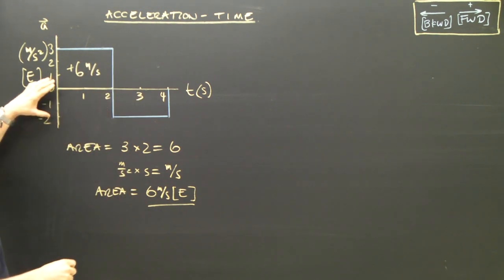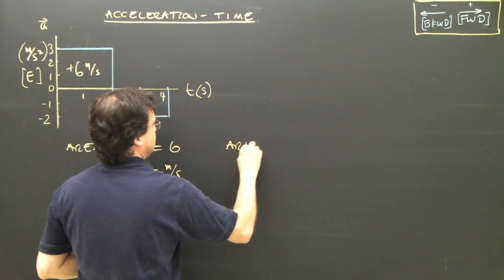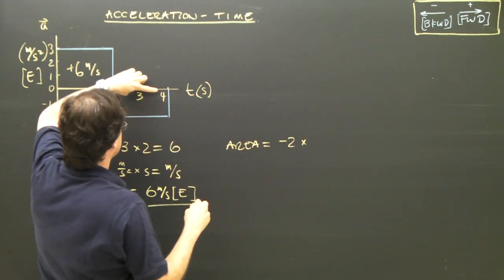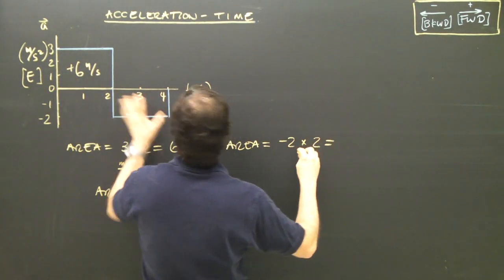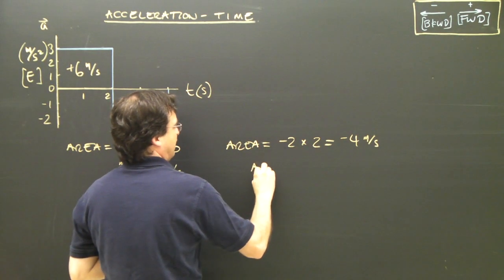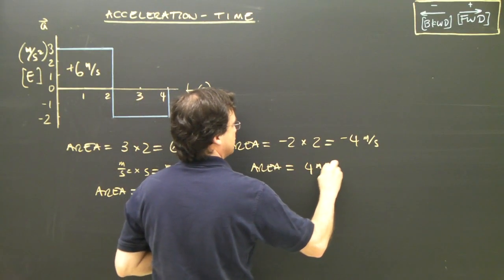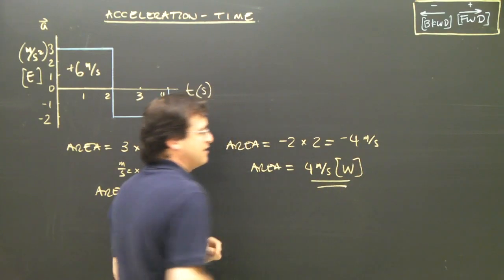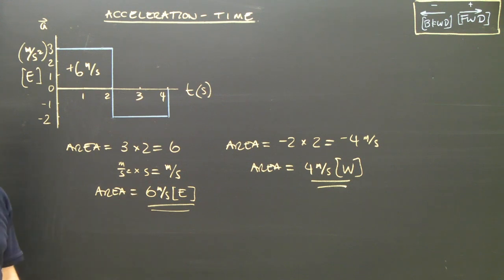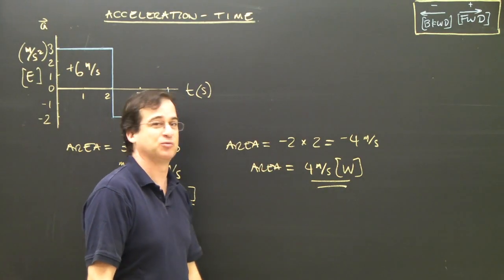Let's find the area over here. The first part was plus six meters per second. This area is going to be negative — it's base times height. The area here is negative two times two, which is negative four meters per second. So that area is four meters per second west. These really are the change in velocity: my velocity changed by six meters per second towards the east, and in this case my velocity changed by four meters per second towards the west.